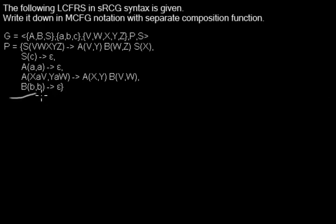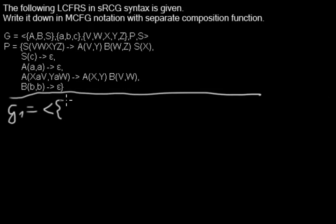So basically this is mostly a rewrite of the LCFRS. The MCFG consists of a similar tuple with the non-terminals, so in this case A, B, and S, then with the terminals, they are also the same: a, b, c.